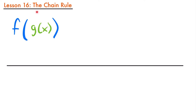Welcome back. The chain rule is a rule for derivatives that allows us to take the derivative of composite functions. If you don't remember what a composite function is, I'm going to quickly go over that before I introduce the chain rule. If you want to skip right to the chain rule, you can use the chapters on this video. But let's first talk about what composite functions are and when we need to use the chain rule.